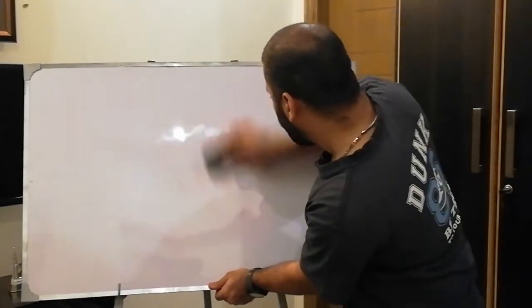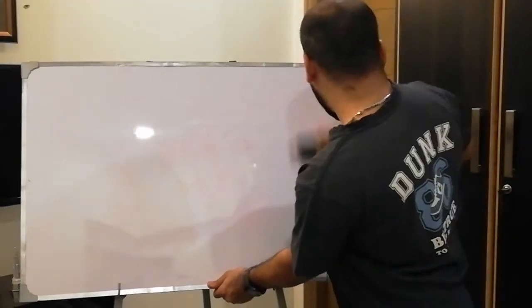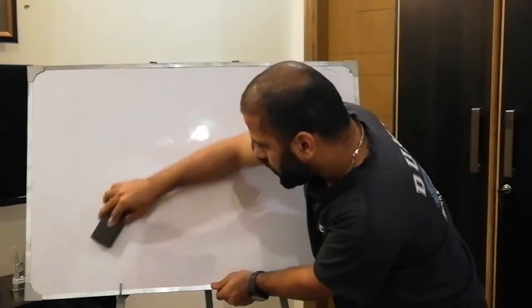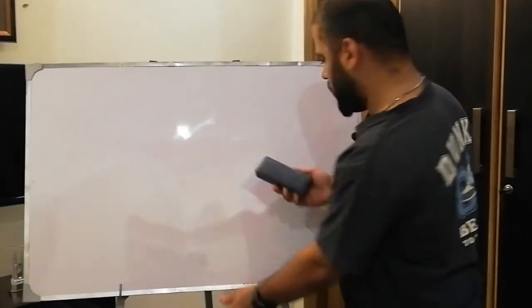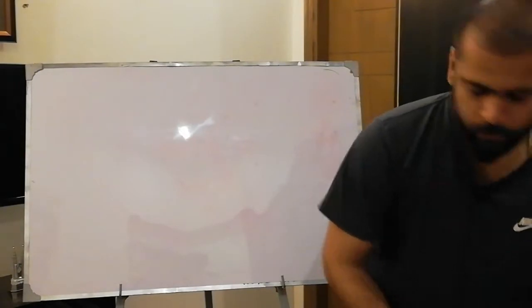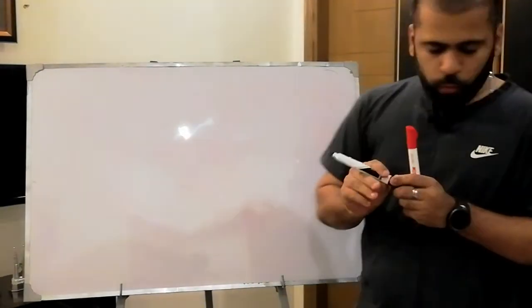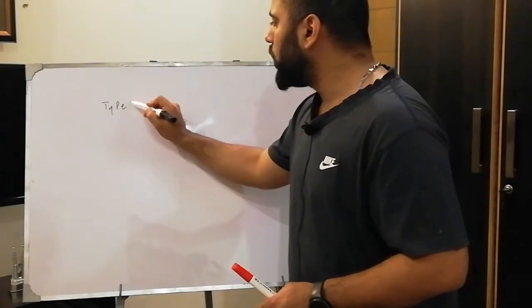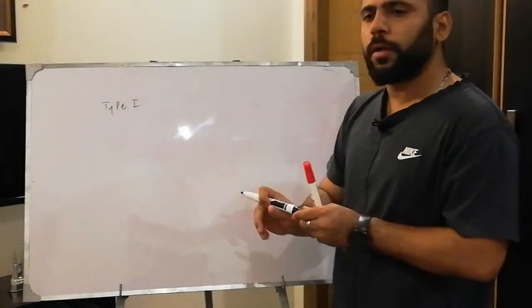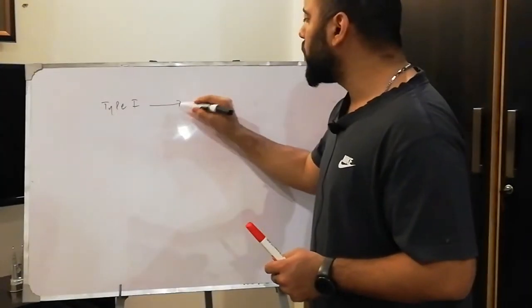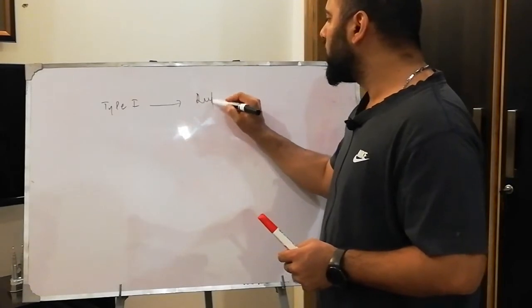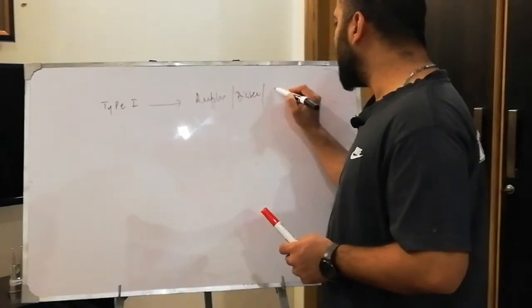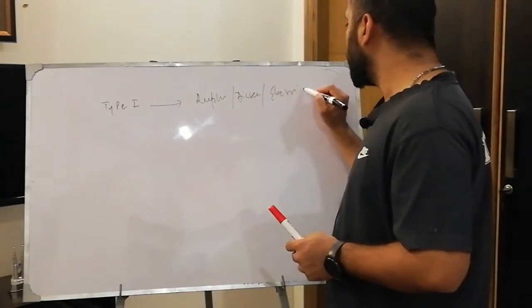There are 5 types of MI. Type 1 is the most common type, which occurs because of rupture, dissection, and erosion of plaque.